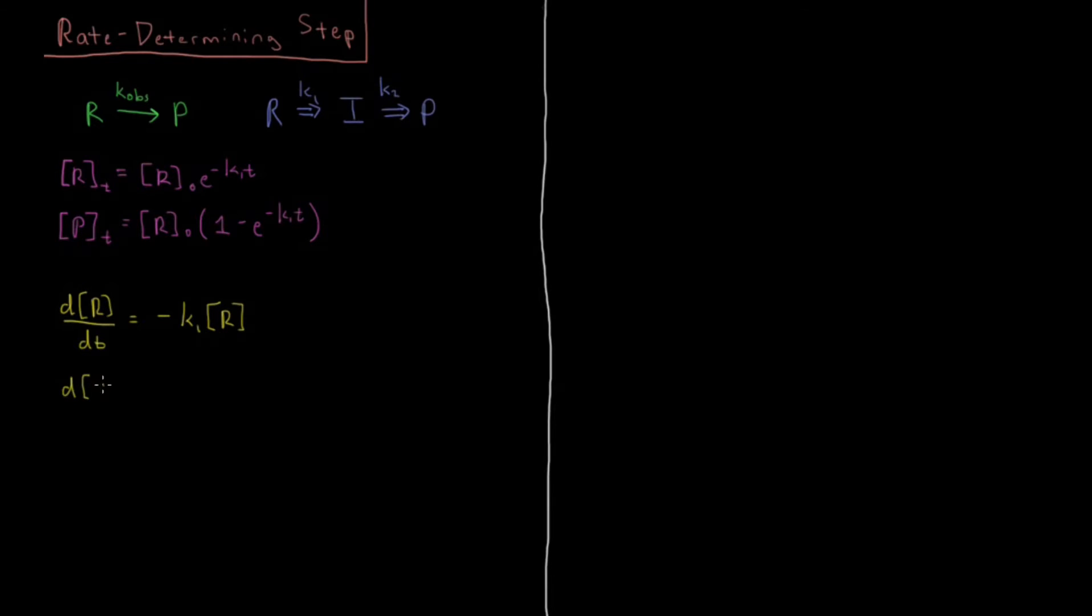And in terms of the intermediate, well it's getting produced from k1, it's getting consumed from k2, so we have plus k1r velocity of reaction 1 which produces it minus the velocity of reaction 2 which consumes it is going to be k2 times concentration of i because k2 is going to be the second step is going to be first order in i if there's a stoichiometric coefficient of 1 here.